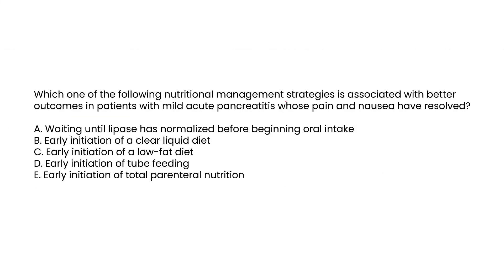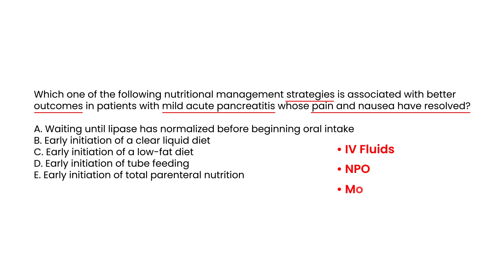Clinical vignette two: Which nutritional management strategy is associated with better outcomes in patients with mild acute pancreatitis whose pain and nausea have resolved? The initial cornerstone treatment is IV fluids, NPO status, and pain medications. Once pain and nausea resolve, recent evidence suggests that the best outcomes occur when you give a low-fat diet — that is choice C.